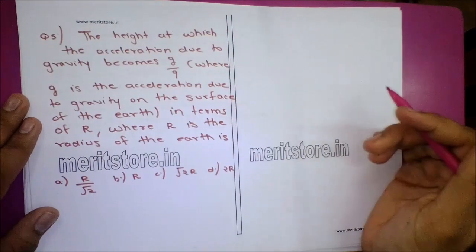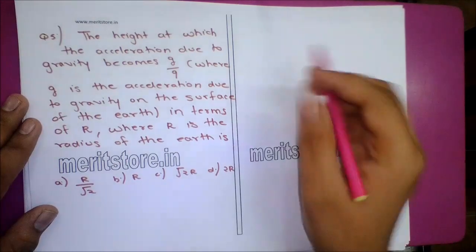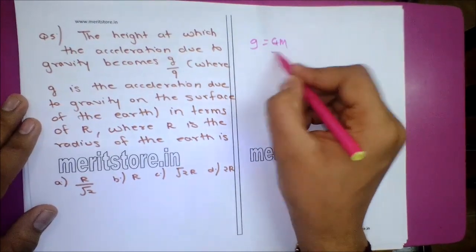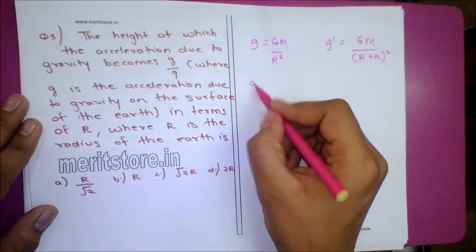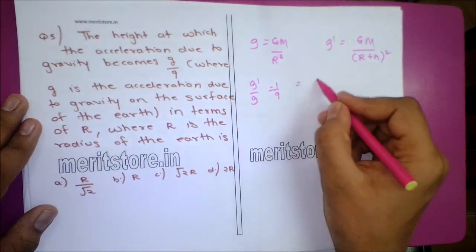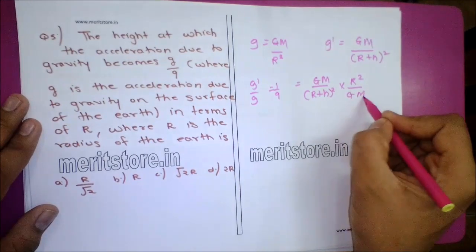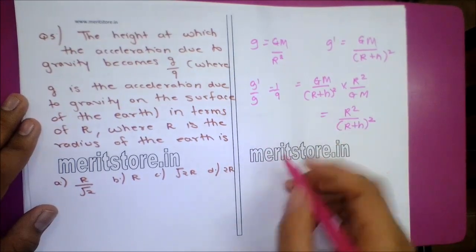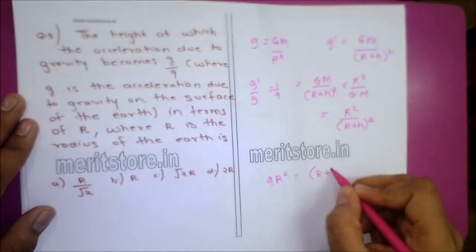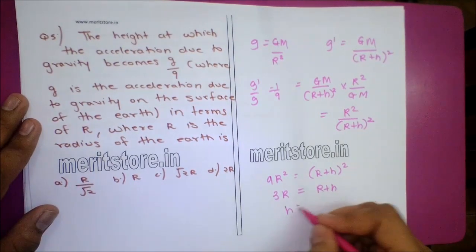Question 5: At what height does the acceleration due to gravity become g/9, where g is acceleration due to gravity on the surface of Earth, in terms of R? We know g = Gm/R² and g' = Gm/(R+H)². Dividing: g/g' = (R+H)²/R². Since g'/g = 1/9, we get 9R² = (R+H)², so H = 2R. Option D is the correct answer.